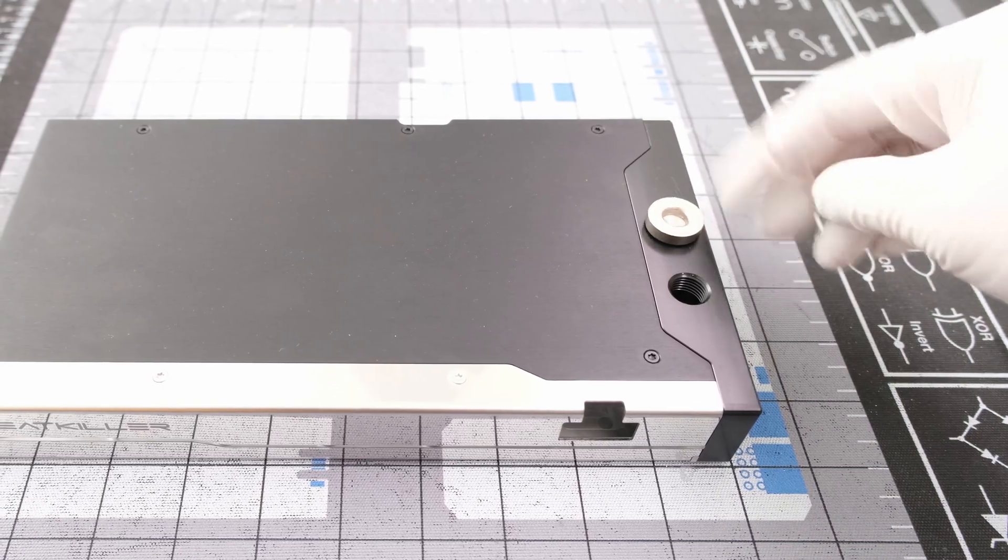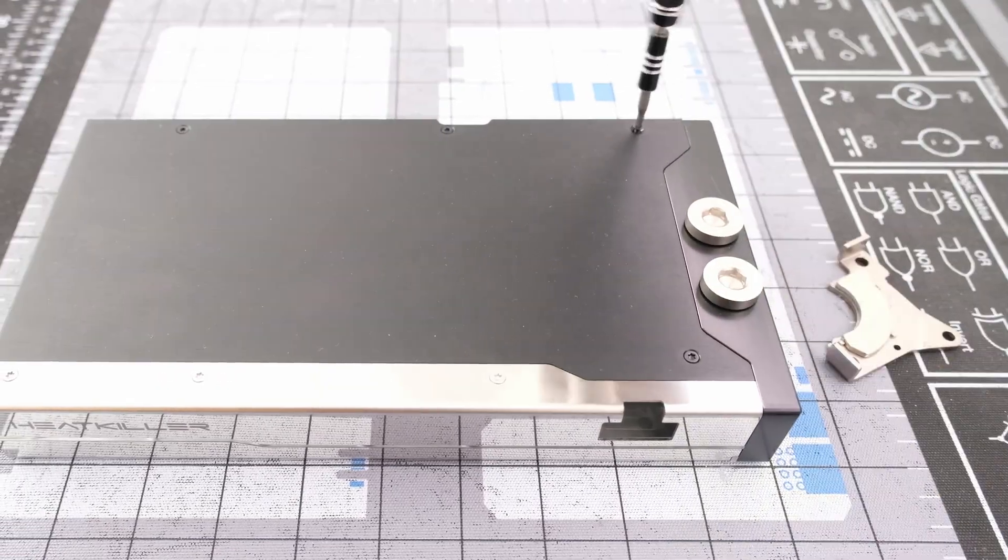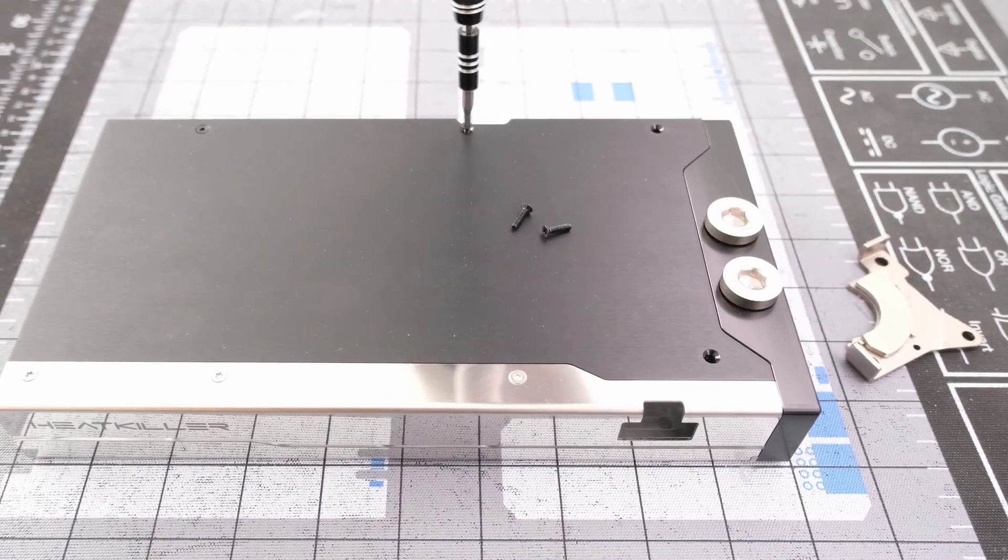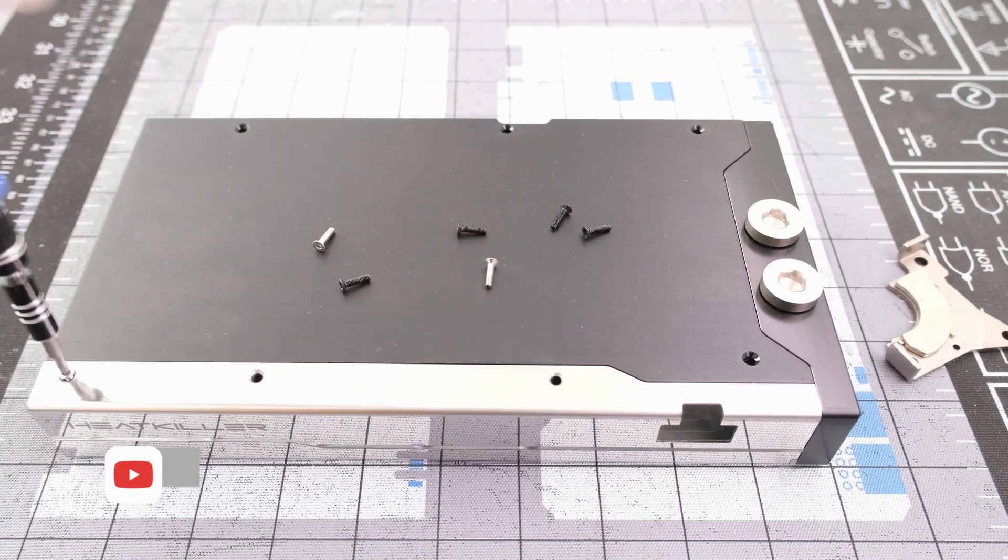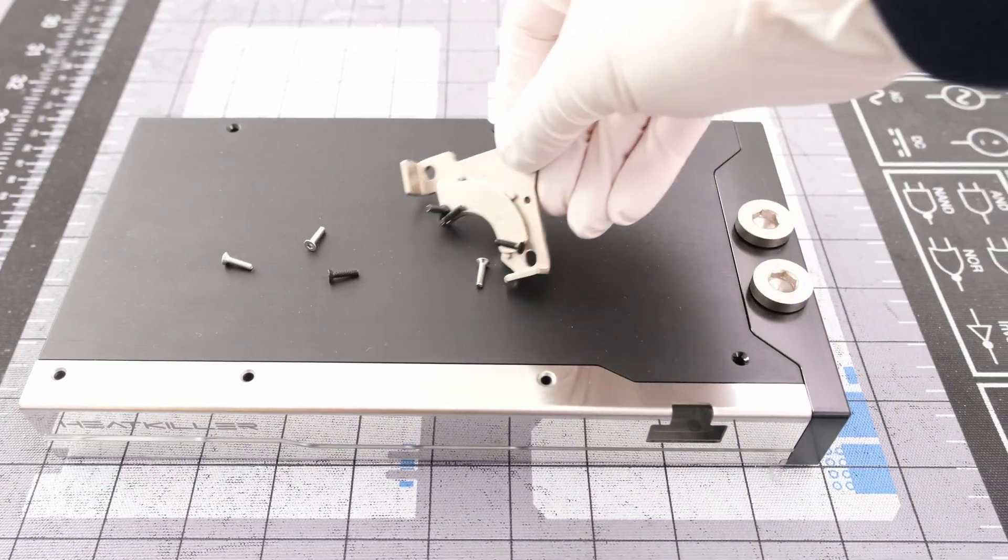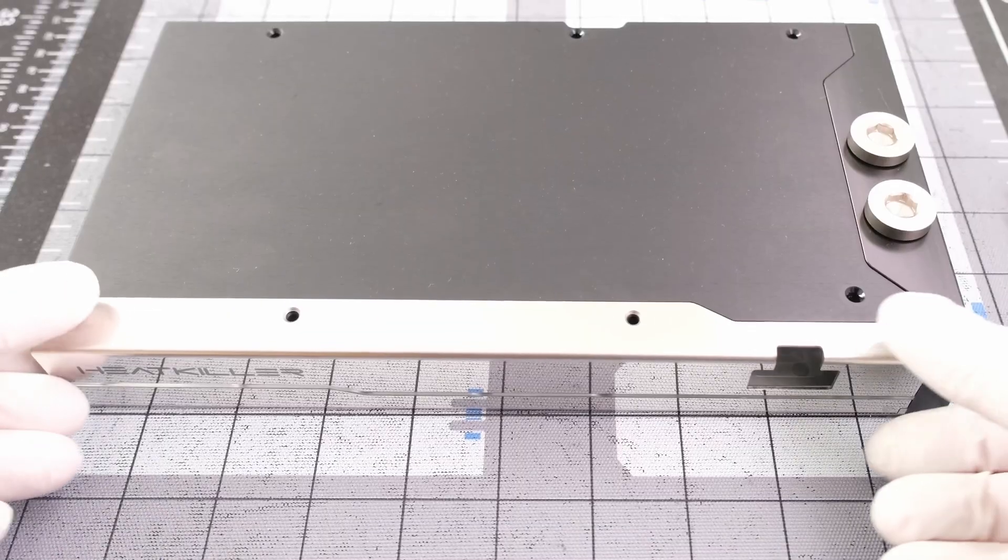The installation begins by adding two Optimus plugs to the back of the terminal. Next, we have seven Torx screws to remove from the back plate and detachable cover.